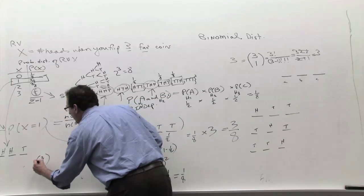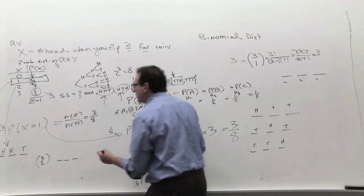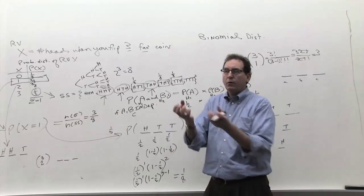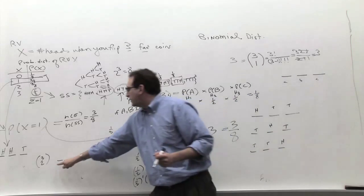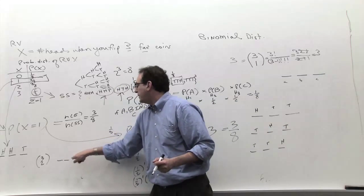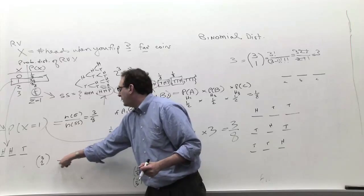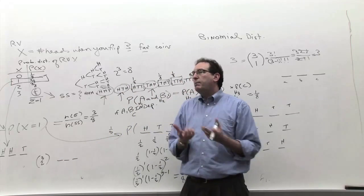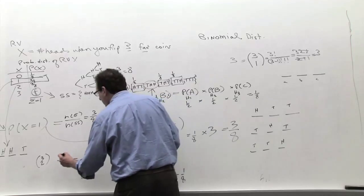So how many ways can I pick? I can pick the first and the second, I can pick the first and the third — that would be heads-tails-heads — or I can pick the second and the third — that would be tails-heads-heads. How many ways can I pull these out? By the combination method you get three choose two. And how much is three choose two?